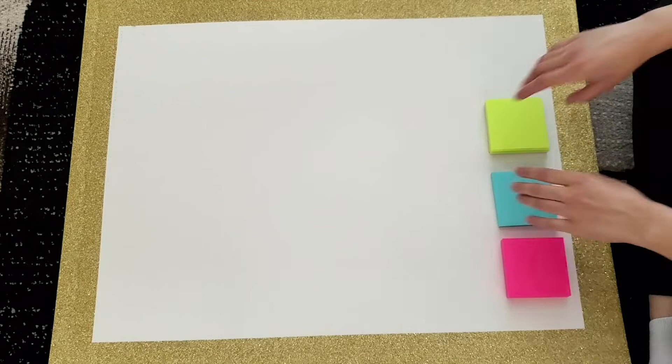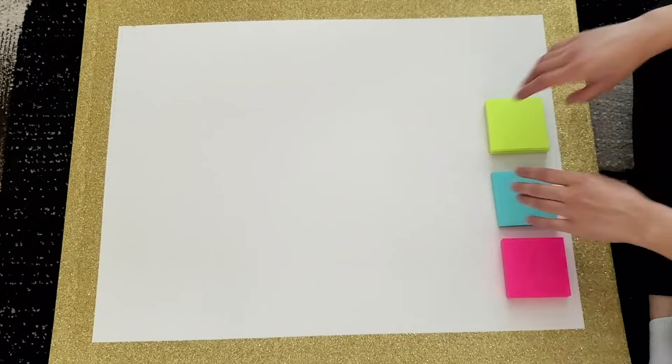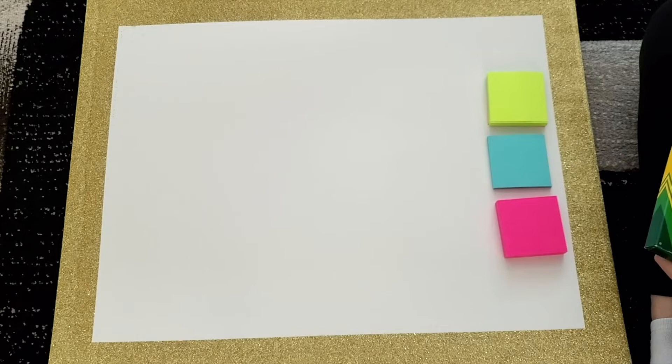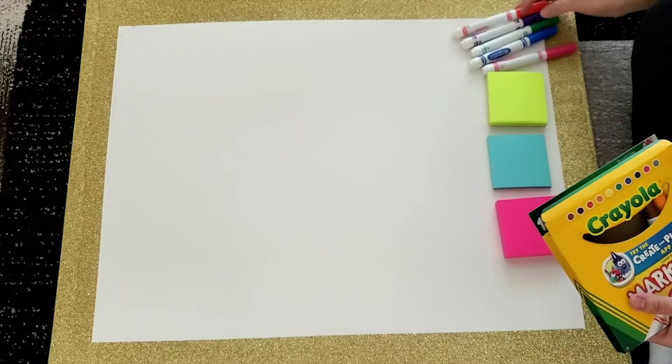And then the final material you will need is some markers. Okay, you guys. So now to start off with the activity, we're going to be separating our three different pieces of post-it notes. So as you can see, I have the pink, the blue, and the green ones. So I'm going to just start setting up my materials. We're going to be taking some random colors out, whichever you choose, it's all up to you, whatever color you want to use.